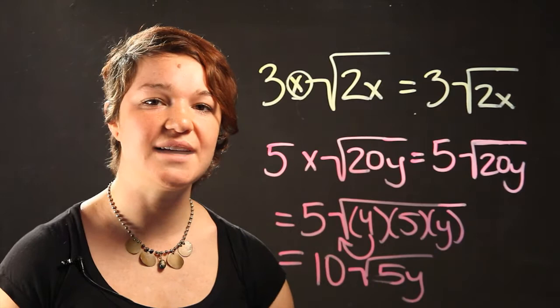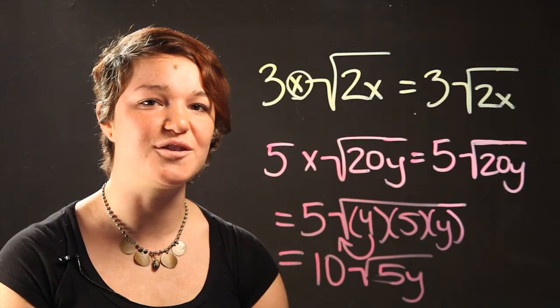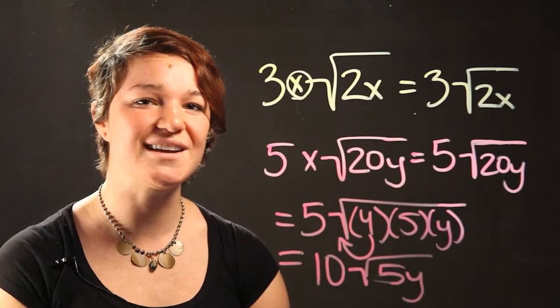So there you have it. That's how you multiply a number by a radical. That's cool. Thanks for watching. I'm Dr. K.